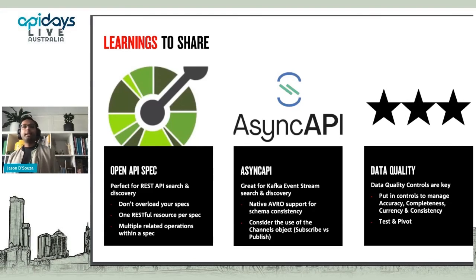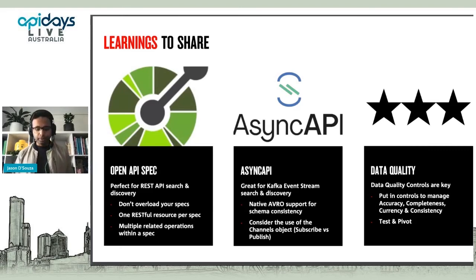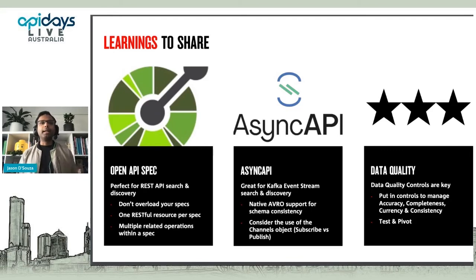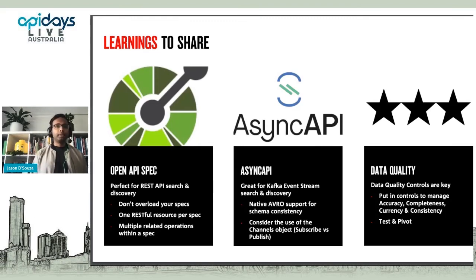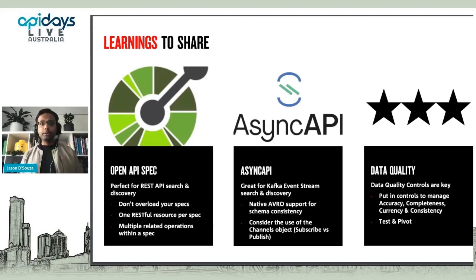On the AsyncAPI side, it's really good for Kafka and Redstreams — that's what we're finding. If you are using Avro, it's working out quite well. Considering the channels object — in terms of subscriber versus publish — for us it's always about the consumer, which is why we chose subscribe, but your consumers may want to publish into it, so that's something to consider. Data quality controls are key. It sounds like a governance thing, and I guess it is — put in things to make sure this is done properly, because you can have the most beautiful website in the world, but if the data is not right, it's not helpful.